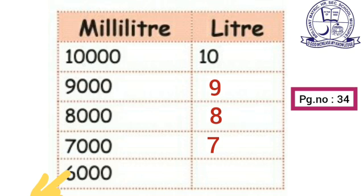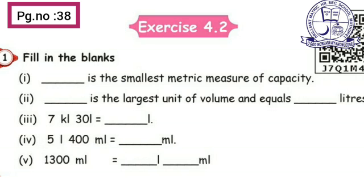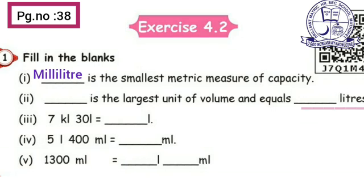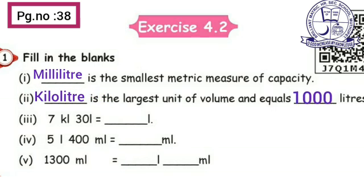Exercise 4.2. Fill in the blanks. First one: the smallest metric measure of capacity is milliliter — milliliter is very small. Next: the largest unit of volume is kiloliter, and it equals 1000 liters.